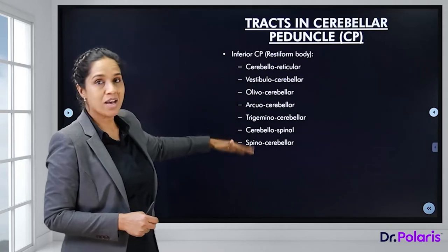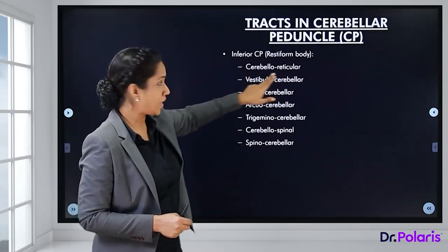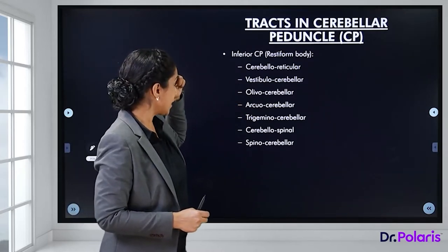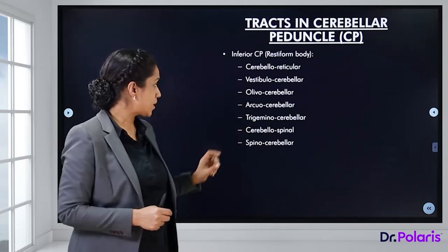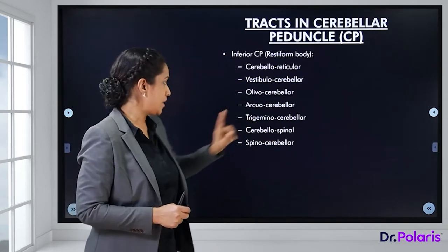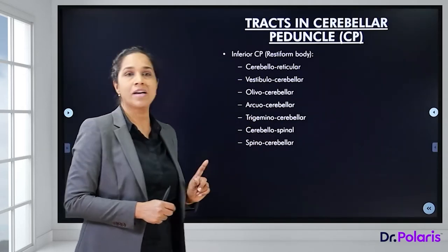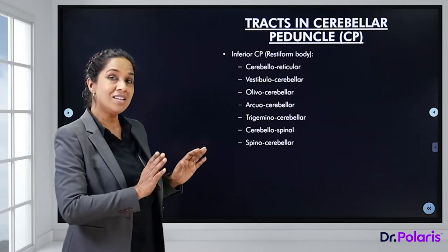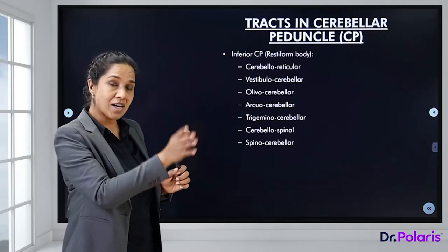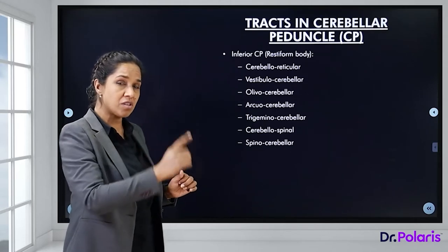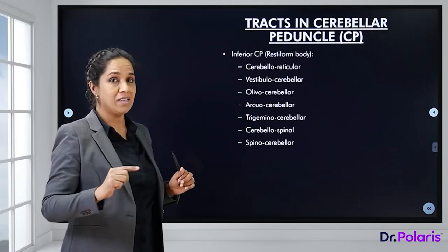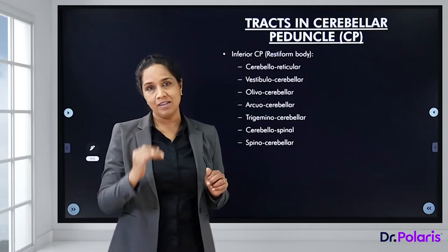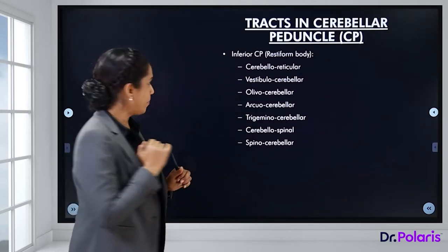Through the inferior cerebellar peduncle, called the restiform body, multiple tracts enter: the cerebelloreticular tract, vestibulocerebellar tract, olivocerebellar tract, aquocerebellar tract, trigeminocerebellar tract, cerebellar spinal tract, and spinocerebellar tract. This is how the cerebellum connects to the nervous system through its three peduncles.